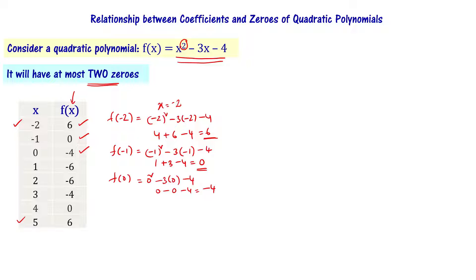We start from x equals minus 2. At x equals minus 2, the value is 6 which is positive. At x equals minus 1, f of x is 0. Then it goes to minus 4 which is a negative number. We select x values such that f of x transitions from positive to negative and negative to positive to capture the range.